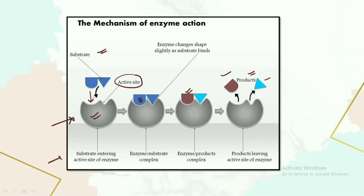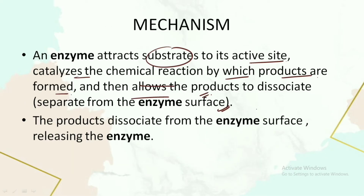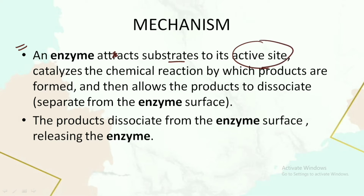Initially we have the substrate entering the active site of the enzyme, then there occurs the formation of an enzyme-substrate complex, then the enzyme-product complex is formed. The substrate gets converted into product at that stage, and then the product leaves the active site of the enzyme. The enzyme is then free for the next substrate conversion.